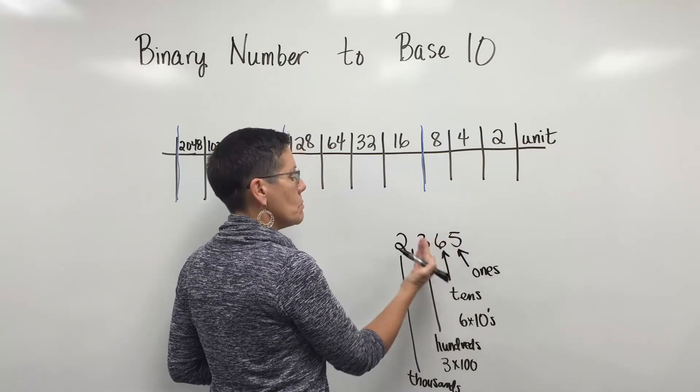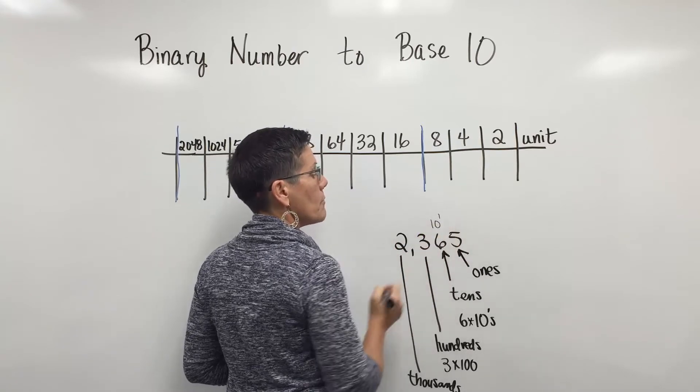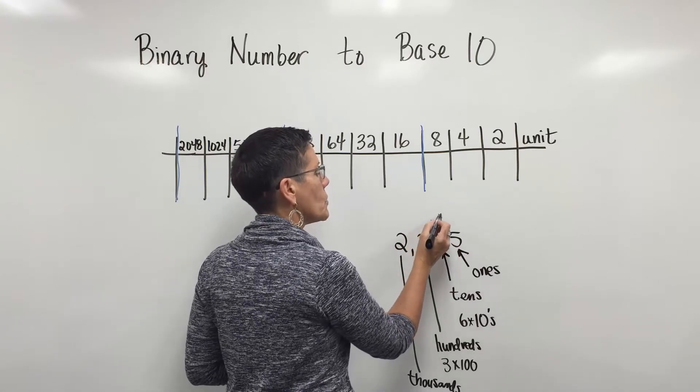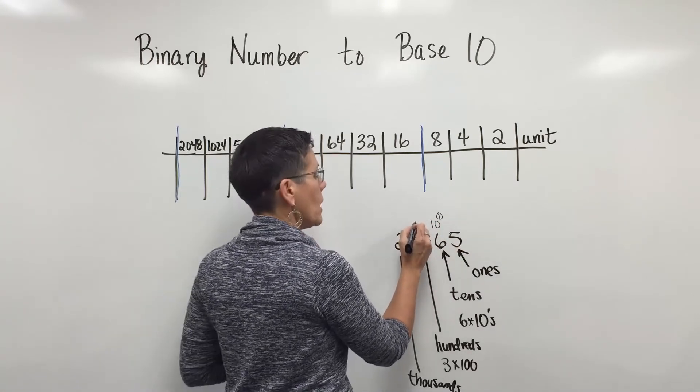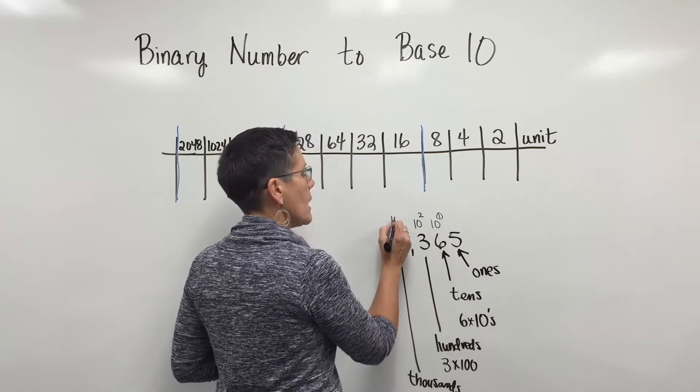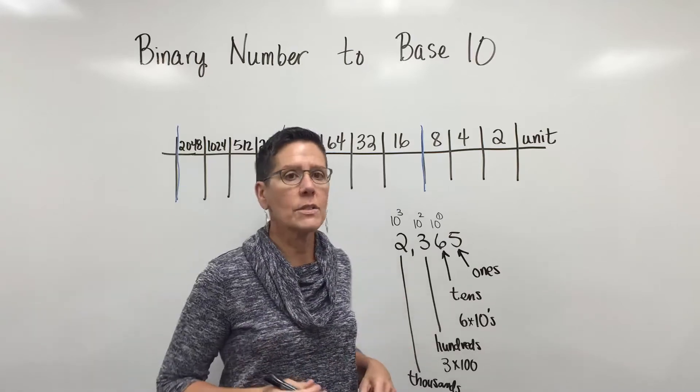Each time you move to the left, you go from a base of 10 to a bigger exponent, or increase a factor of 10. The next position is 100, which is 10 to the second power, the 100s position, and the next position is 10 to the third power, the 1000s position.